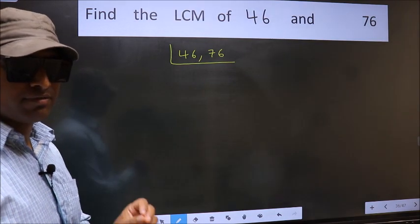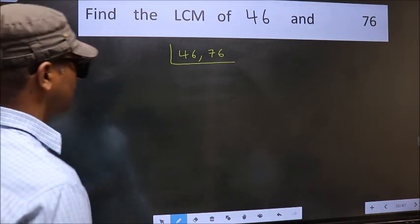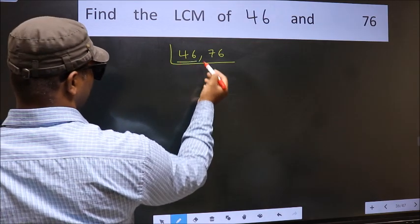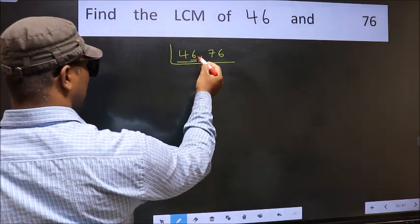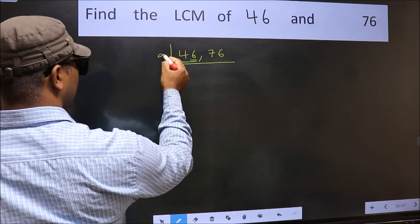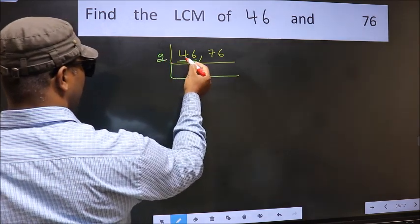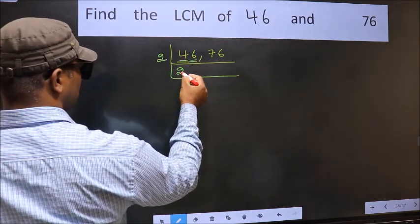Now you should focus on the first number which is 46 here. For this number, last digit 6, even. So take 2. First number 4. When do we get 4 in 2 table? 2 times 2 is 4.